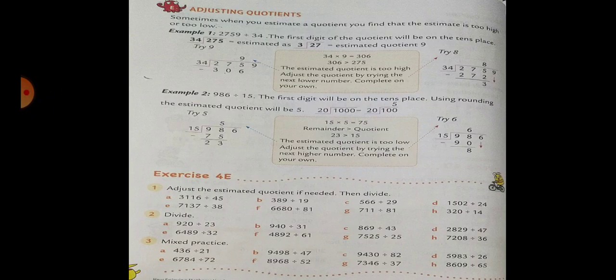the first digit of the quotient will be on the 10th place. 34 divided by 275, estimated as 3 divided by 27, equals estimated quotient 9. So we try the estimated quotient 9.